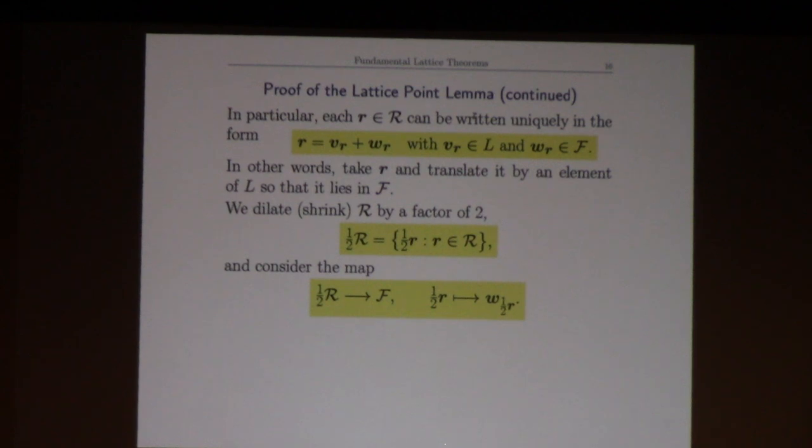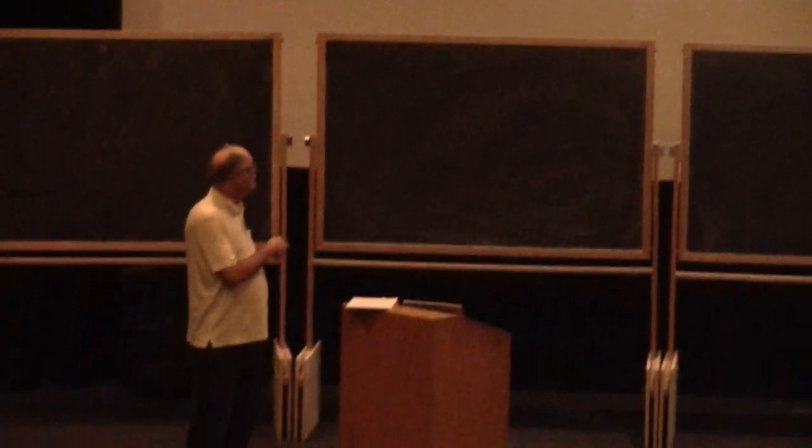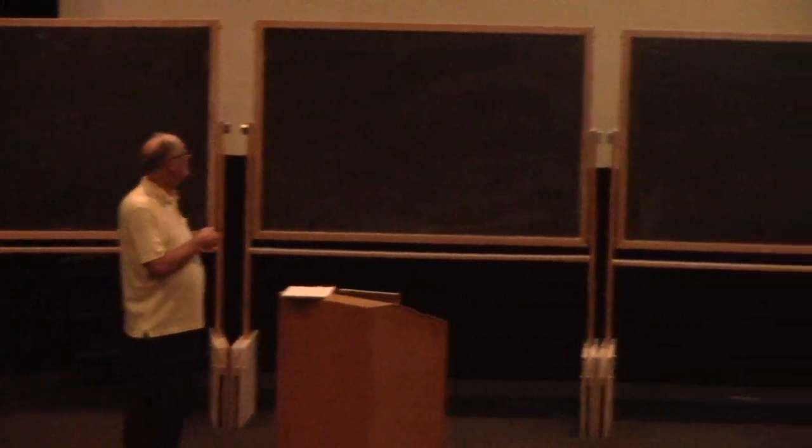So what we do is we shrink or dilate the region by a factor of two, and then I look at the map that sends an element in the dilated region to - remember I can write that point one half r as a lattice vector plus a fundamental domain vector, and I'm just going to send it to its fundamental domain vector. If you think about what we're doing this is essentially just going to be a linear translate kind of thing, so this map is going to preserve volumes at least locally.